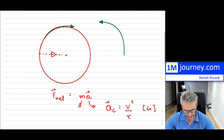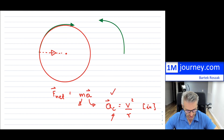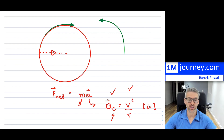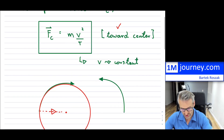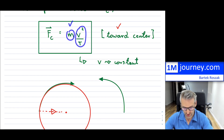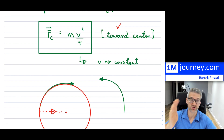So centripetal force is always towards the center, and so is centripetal acceleration. The subscript C — or CE — just denotes centripetal. Since centripetal acceleration is V²/R, and you multiply by mass M, it shouldn't be a shock: F_net equals mass times acceleration, and in this case the net force is the centripetal force — F_c = mV²/R — keeping the object in its circular motion.